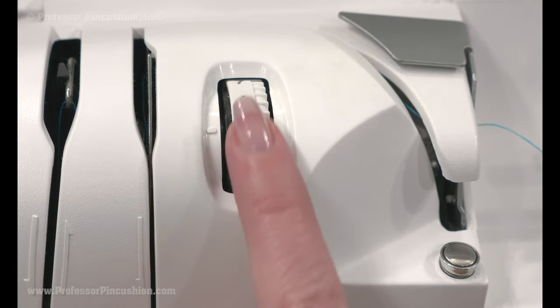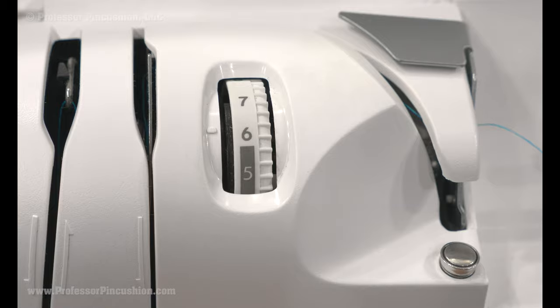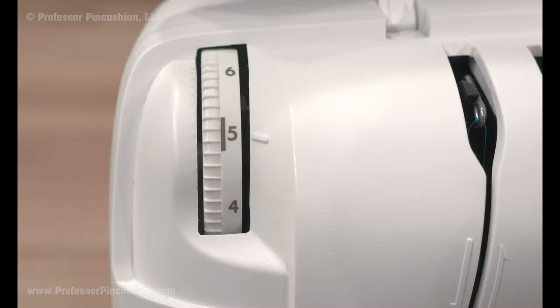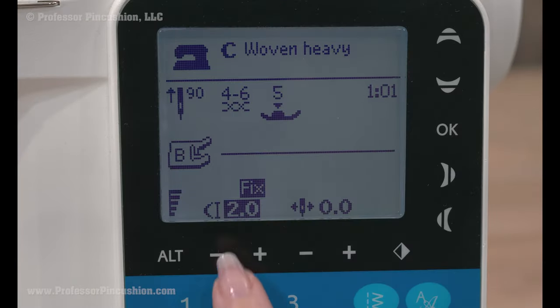Test sew on fabric to adjust the sewing machine tension. You may want to use a slightly higher thread tension and a slightly lower presser foot pressure. For heavyweight denim, increase thread length to a 3 or a 3.5.